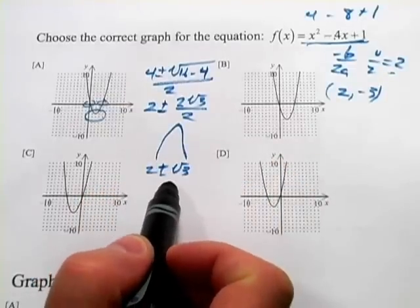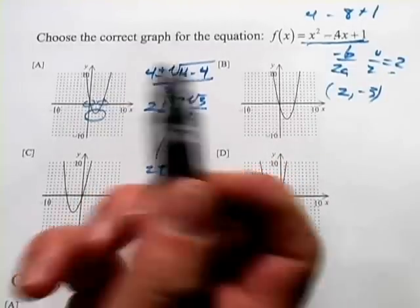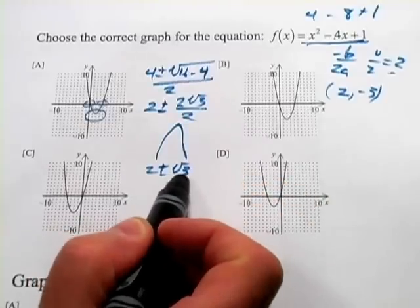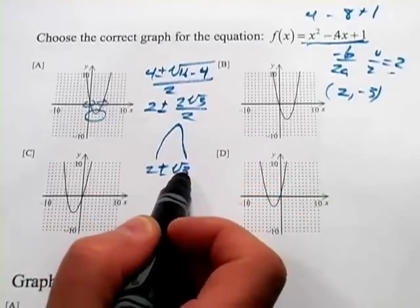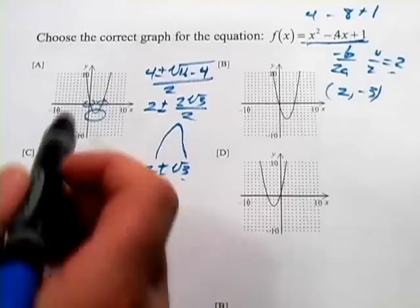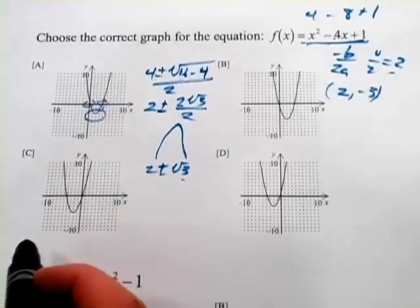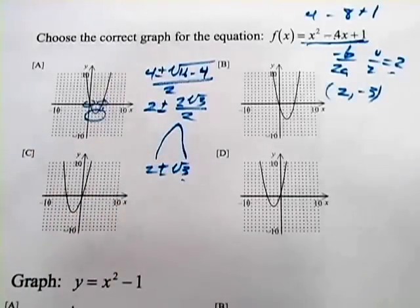Now, 2 plus or minus the square root of 3 looks like it's going to be pretty close to 0, because the square root of 3 is close to 2, and then close to 4 or so. And lo and behold, there you have it, right there. So those are two quick ways to check a graph.